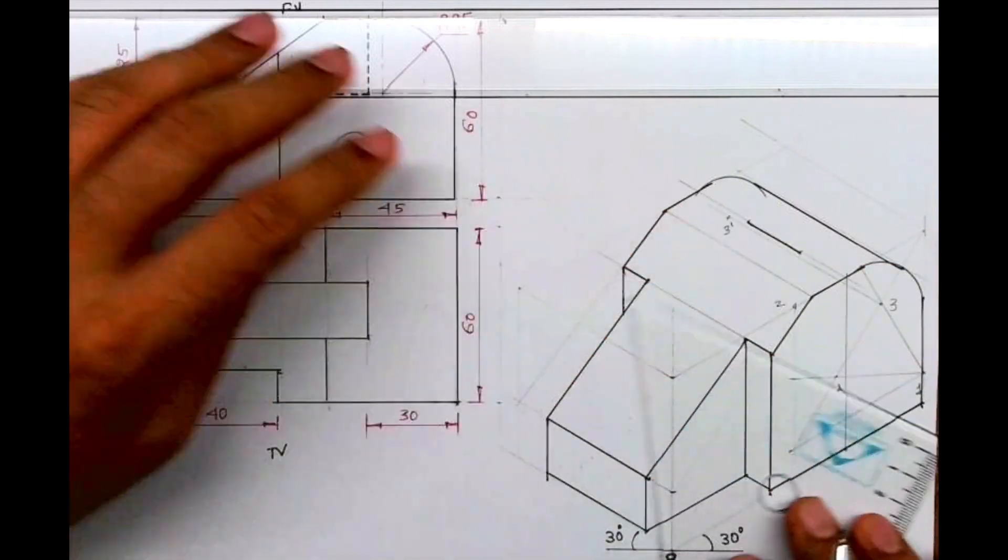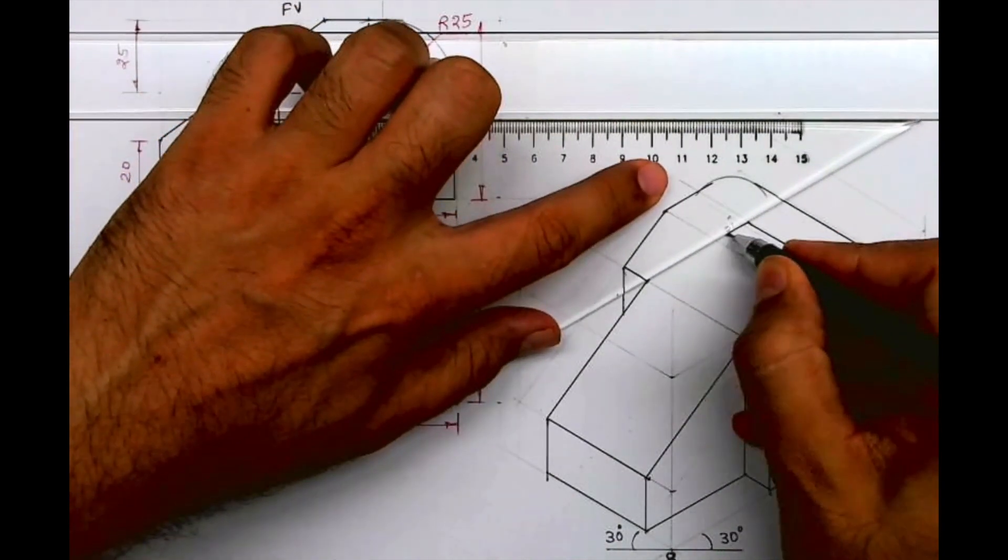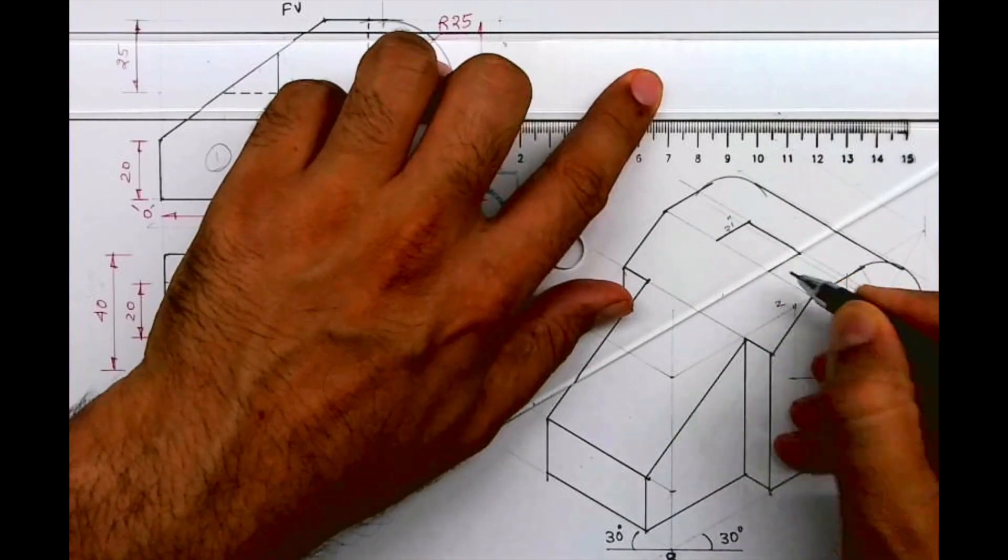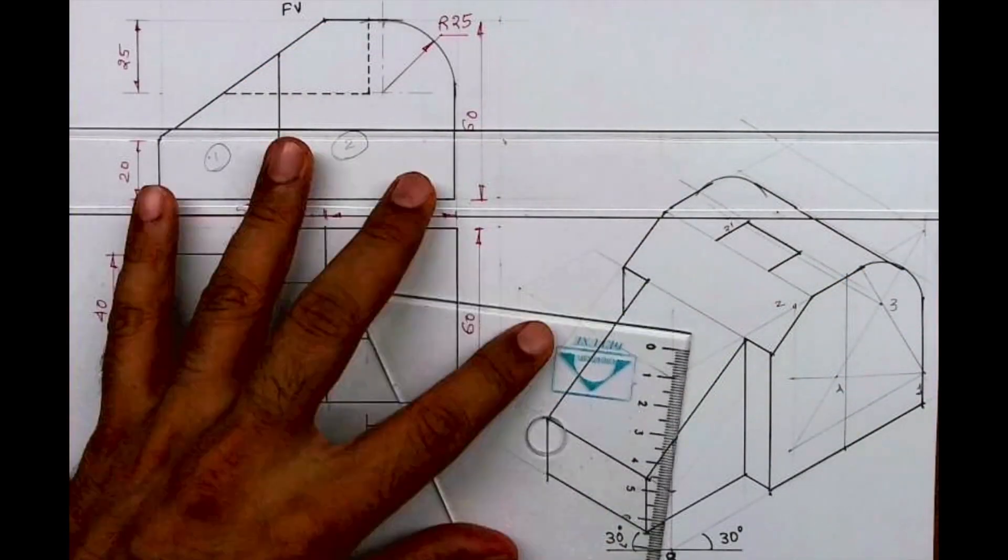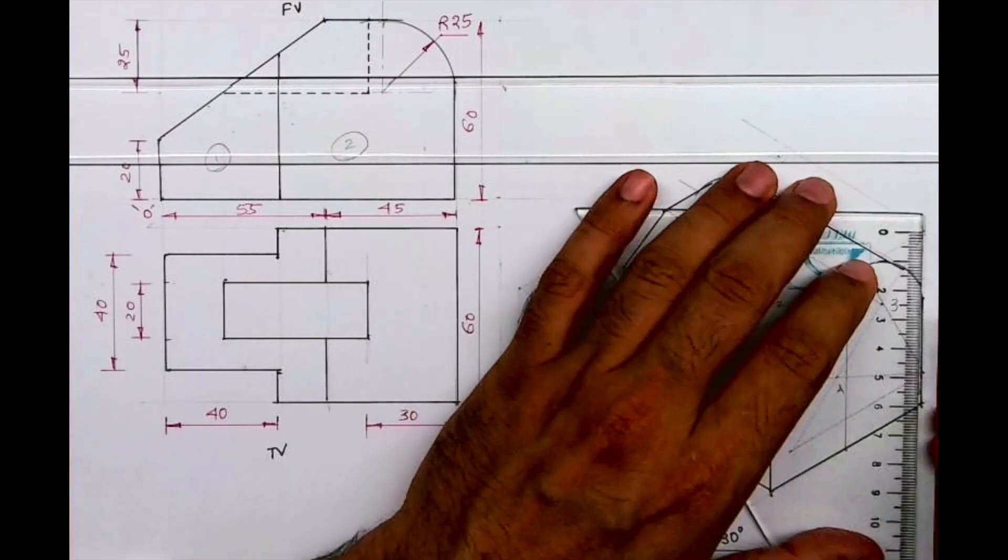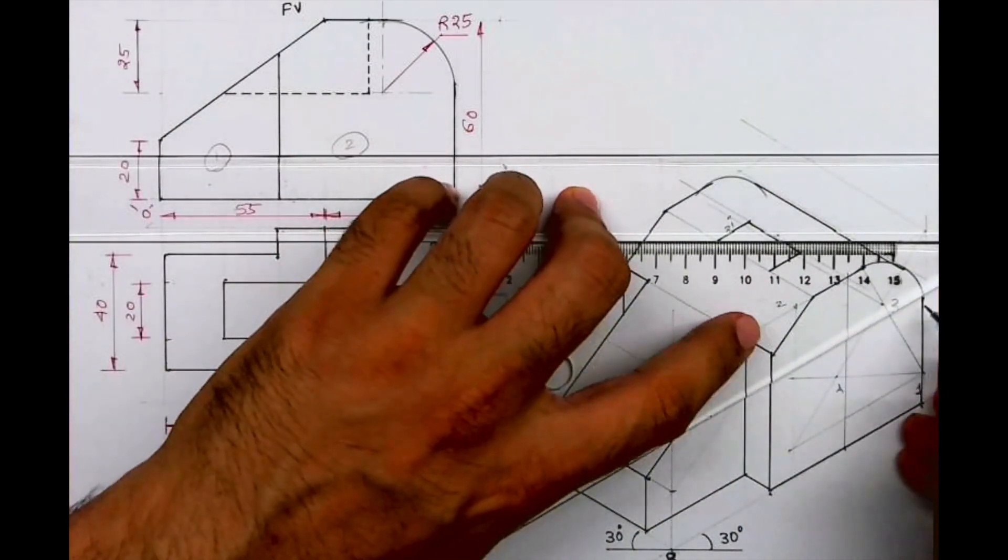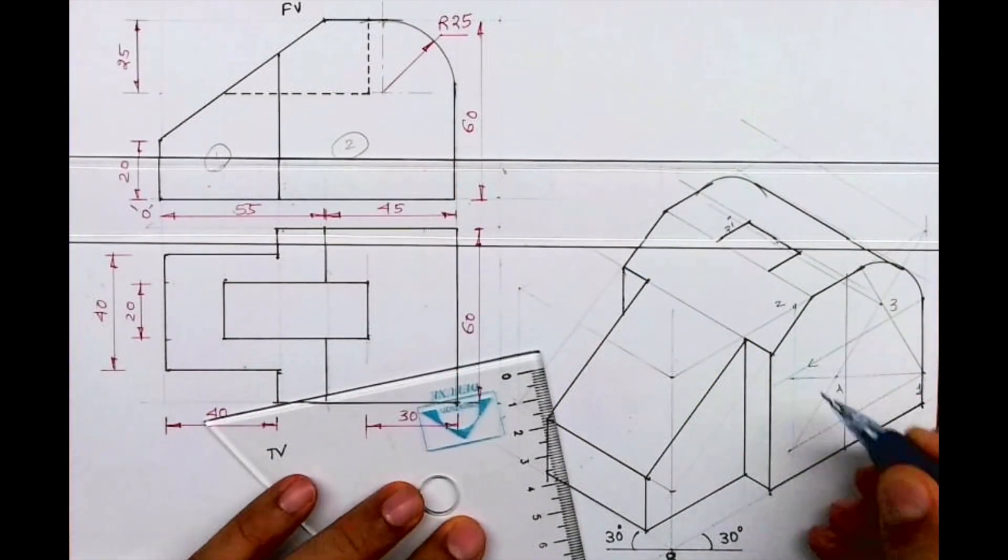So after drawing that part, now we need to extend. The only issue is we don't know the length. The depth we know, but the length we don't know. So for that, what we will do is take 25 from here. We can take on the box, we'll take it till this edge, then we'll transfer.